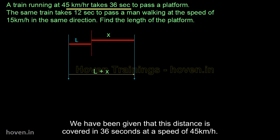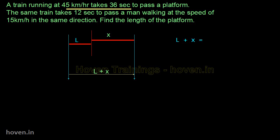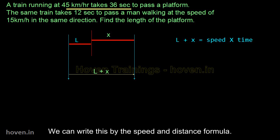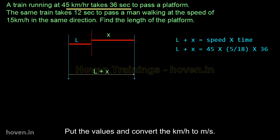We have been given that this distance is covered in 36 seconds at a speed of 45 km per hour. We can write this by the speed and distance formula. Put the values and convert the km per hour to meters per second. We can simplify it to get the total as 450.